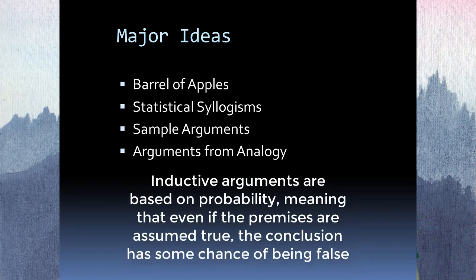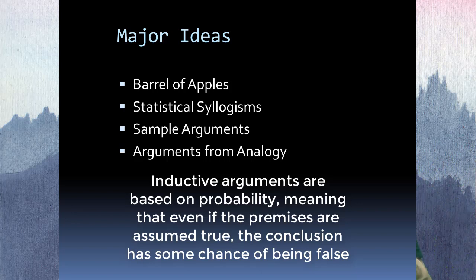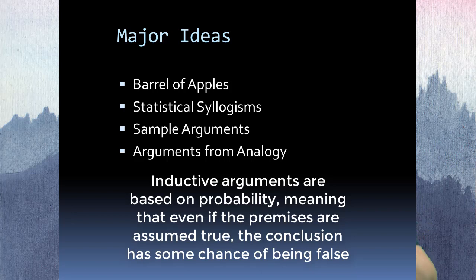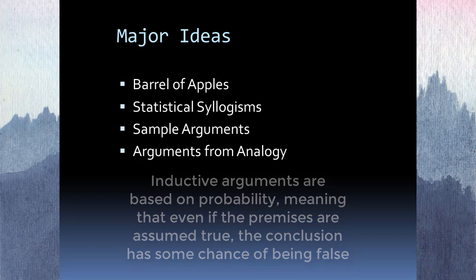That's the difference: in a deductive argument, if the premises are true, the conclusion must be true. In an inductive argument, the conclusion could always be mistaken or ambiguous. Inductive reasoning is about building up a case for something, and no matter how close you are to certainty, there's always a small percentage that you could be mistaken — that's the idea.